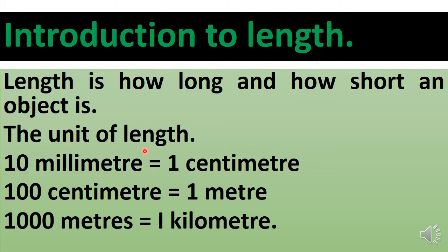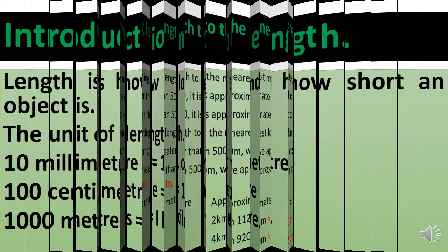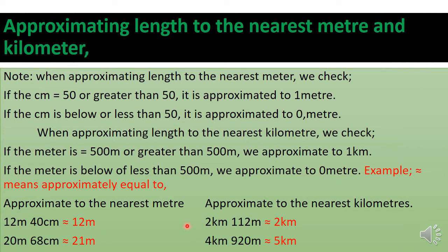The units of length are: 10 millimeters make one centimeter, 10 centimeters make one decimeter, 10 decimeters make one meter. So 10 times 10 is 100, meaning 100 centimeters make one meter, and one thousand meters makes one kilometer. Another name for thousand is 'kilo.'